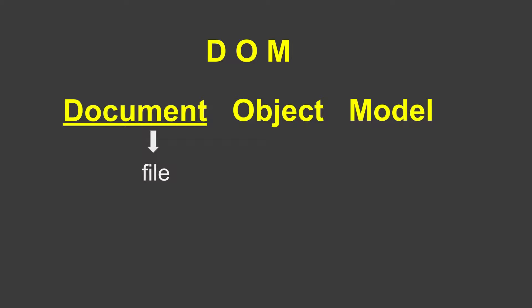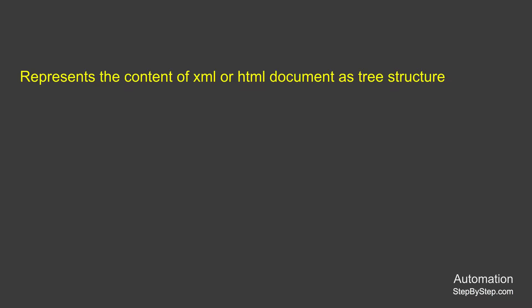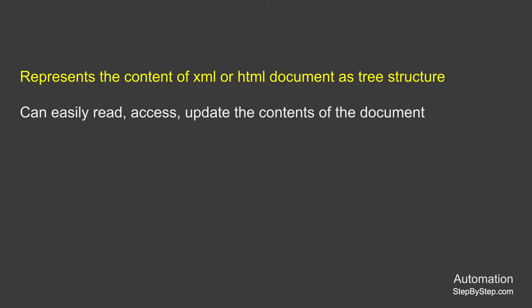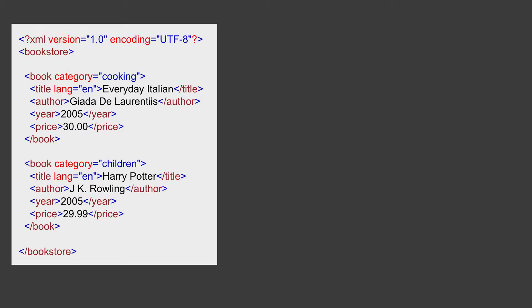To explain in very simple words: DOM stands for Document Object Model, where document is the file (like an HTML or XML file), object refers to the tags and elements of that file, and model is the layout or structure. So Document Object Model represents the content of XML or HTML documents as a tree structure. It can be used to easily read, access, and update contents. It is a programming interface or API, represents the document as a tree structure internally in memory, and can be used with programming languages like JavaScript.